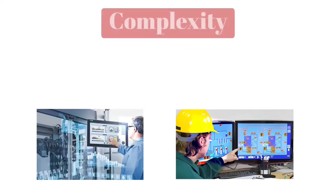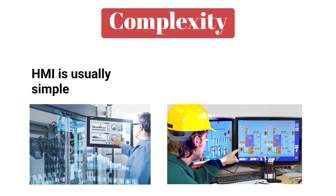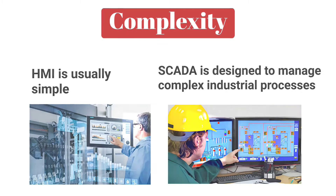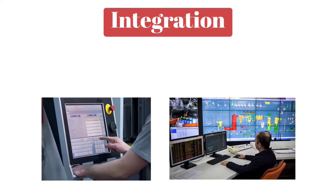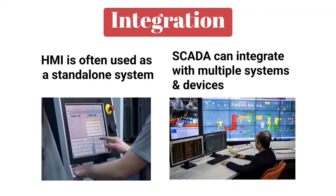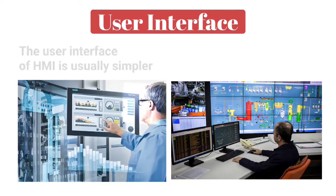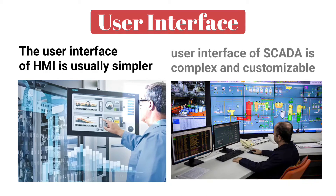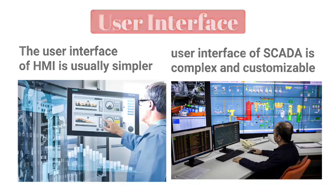The next difference is complexity: HMI is usually simple, whereas SCADA is designed to manage complex industrial processes. The next difference is integration: HMI is often used as a standalone system, but SCADA can integrate with multiple systems and devices. The next difference is user interface: the user interface of HMI is usually simpler, whereas the user interface of SCADA is complex and customizable.